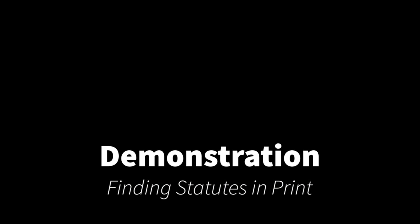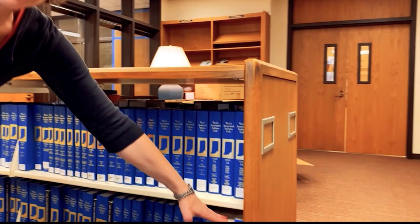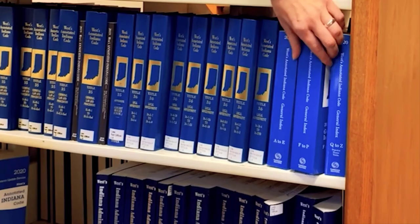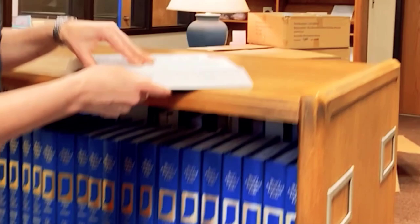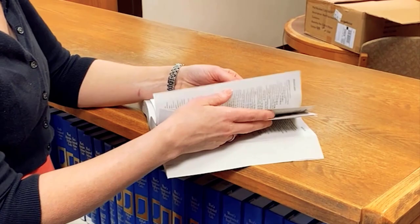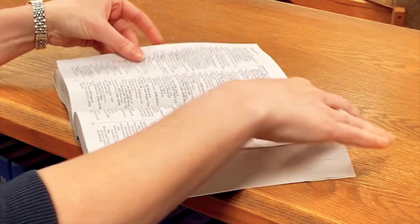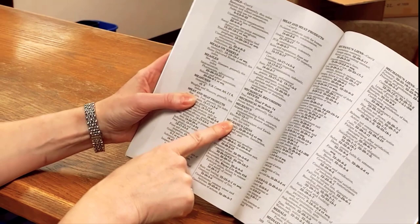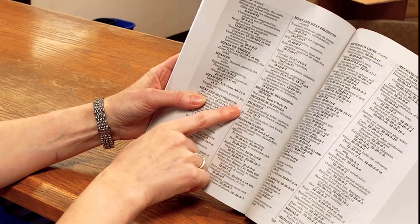I'm going to do a quick demonstration of how to find a statutory code section in a print code, using the Indiana Code. The first thing you do with a print code is look for the index — indexes are shelved at the end of the code volumes. Today I'm interested in mechanics liens, so I want the index volume that covers M, which is in the F to P volume. I look for M-E-C-H for mechanic, and find mechanics liens between 'meals' and 'mediation.' I can see that what I need is Title 32, Article 28, Chapter 3 — they all fall under 32-28-3.